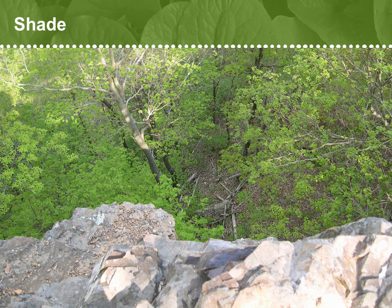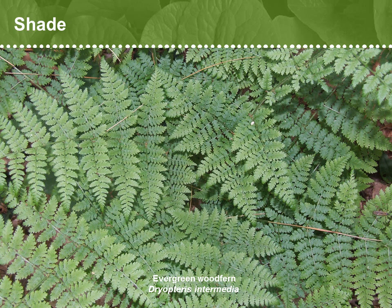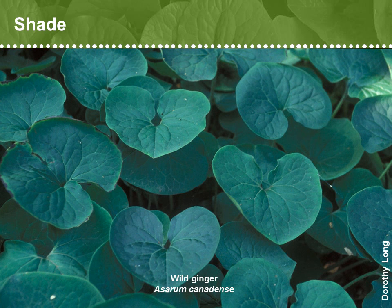Whether shaded by cliffs or by a dense tree canopy, plants growing in darker conditions must be well suited to garnering what dappled sunlight they can, so light becomes part of the equation of microclimate. With their large leaves, ferns do especially well in shade. Some, like this evergreen wood fern, Dryopteris intermedia, also retain their leaves all year round to capture sunlight. So-called spring ephemerals — like violets, bloodroot, Dutchman's breeches, and wild ginger, Asarum canadense — also do well in shade. They arise early in spring before the canopy has leafed out, take advantage of sunlight and nutrients, and move quickly to reproduce. By the time the canopy has closed, they've largely finished their life cycle for the year.